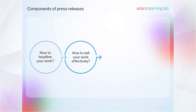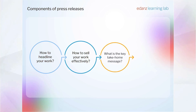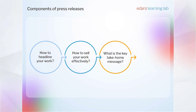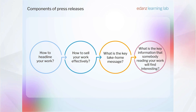Don't forget that we've talked about how to headline your work, how to sell your work effectively in your title, in your abstract, and in your covering letter to editors. Now that your paper is about to be published, you should clearly know as an author what the key take-home message is — what's the key information that somebody else reading your work will find interesting. So the headline here should be the easy part for you to put together as a writer.